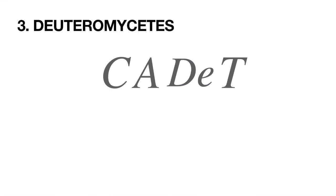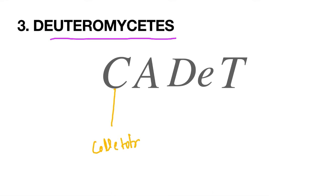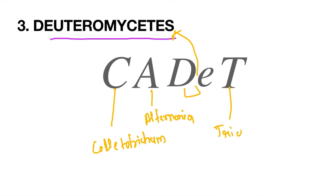Our next class is Deuteromycetes, and our trick is CADET — like a cadet selected for the army. C is Colletotrichum, A is Alternaria, D stands for Deuteromycetes, and T is Trichoderma.